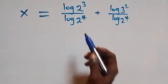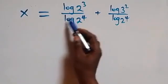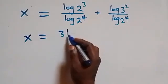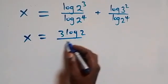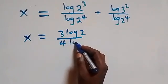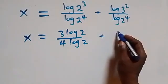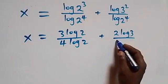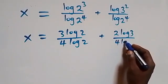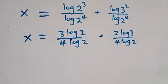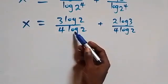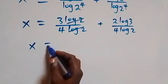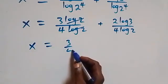Applying the power rule of logarithms, the powers come to the front. We have x equals 3·log 2 over 4·log 2 plus 2·log 3 over 4·log 2. In the first fraction, log 2 cancels, leaving us with x equals 3/4 plus ...